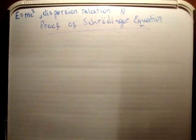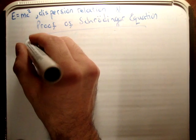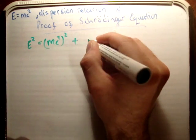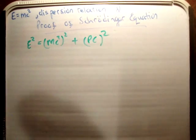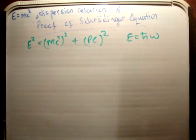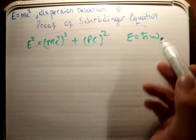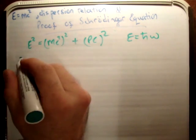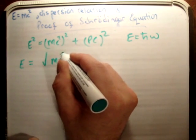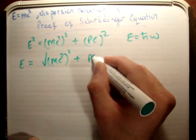The next thing we're going to do is look at the dispersion relation. We know that the energy is equal to Planck's constant over 2π times ν, and E is equal to ℏω, where ω is the angular frequency. So let's rewrite the energy equation: E equals the square root of (mc²)² plus (pc)².